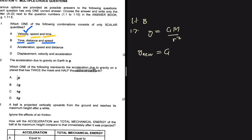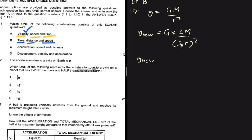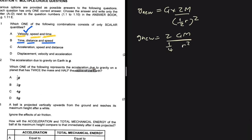Let's call the new gravitational acceleration g_new. We have twice the mass, so instead of m we have 2m, and we have half the radius, so instead of r we have r/2 squared, which gives 1/4 r squared. So g_new equals 2m divided by 1/4 r squared.